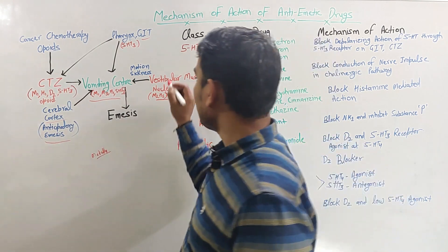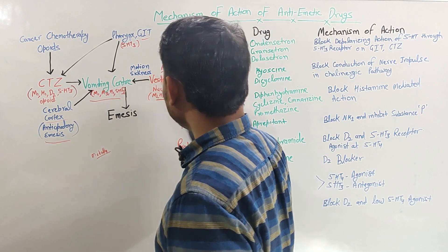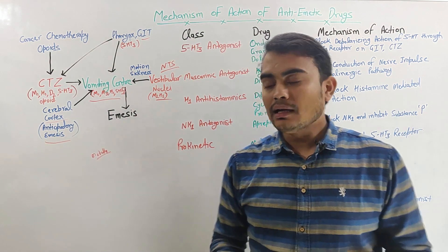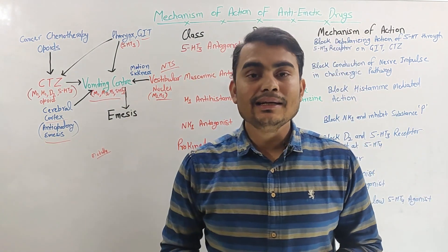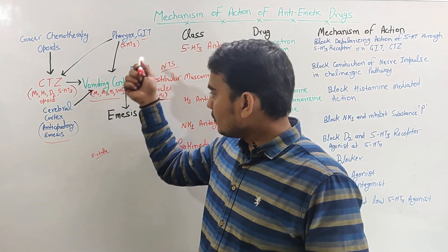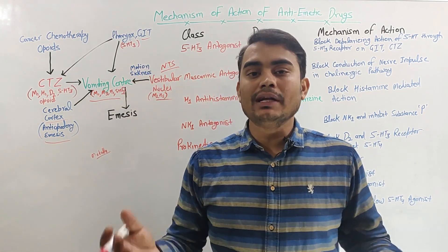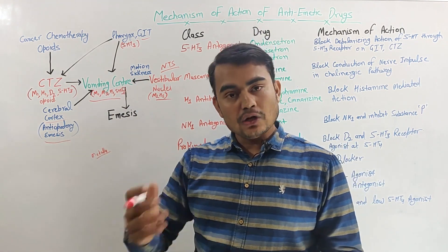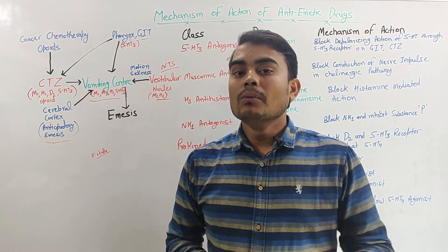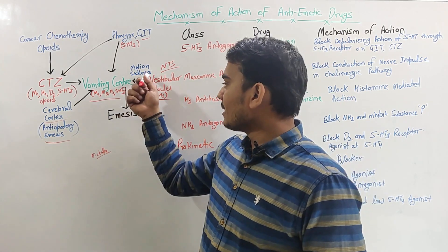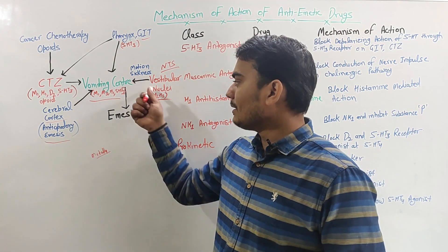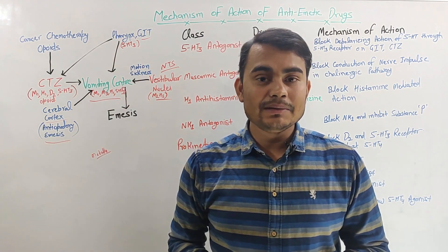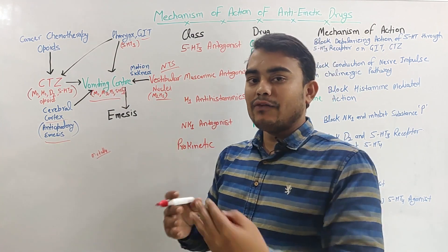The next center is the vestibular nuclei, also called the NTS — Nucleus Tractus Solitarius. The vestibular nuclei have muscarinic and histaminic receptors. When we travel a lot, especially in mountain regions, this can induce vomiting — this is called motion sickness. Motion sickness acts through the NTS center, which stimulates the vomiting center.